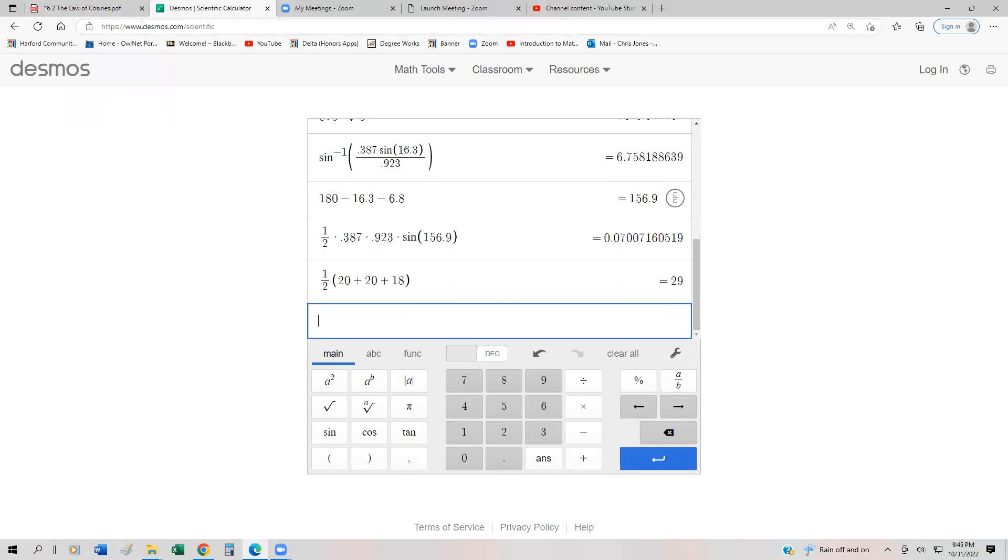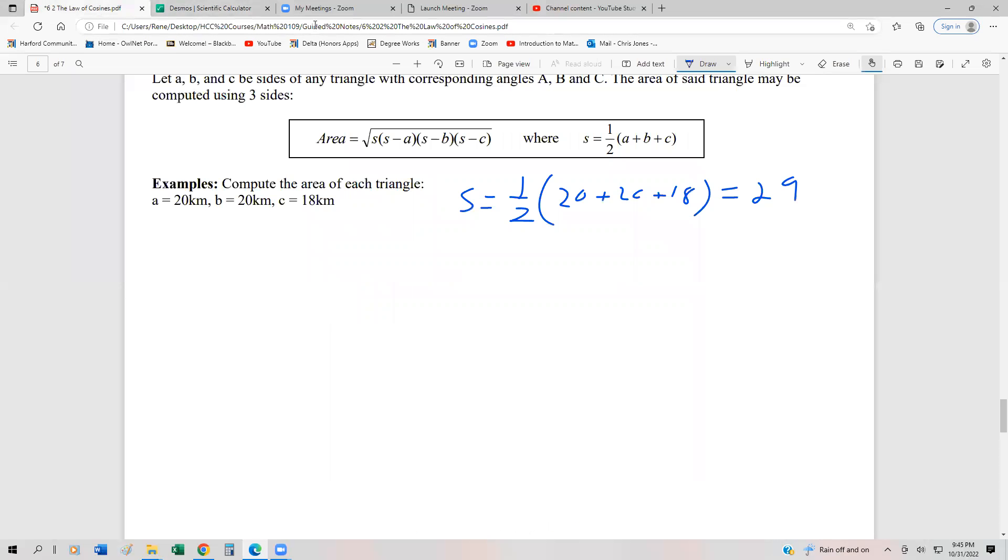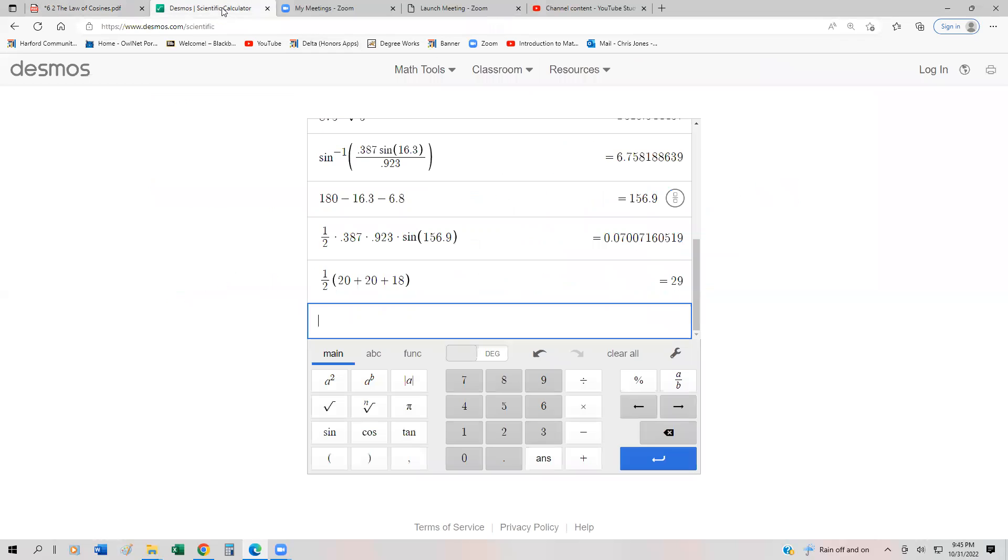And so at this point, we could just go ahead and stick everything into Heron's formula. So the area is going to be equal to the square root of 29, which is S, and then 29 minus 20 times another 29 minus 20, and then times 29 minus 18. At this point, we could just shove this immediately into our calculator exactly as it looks.